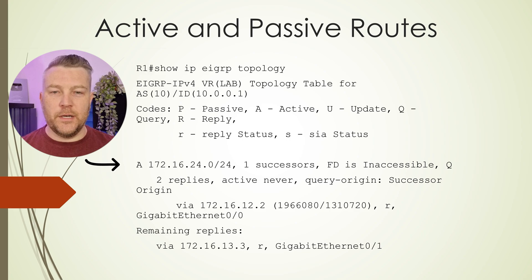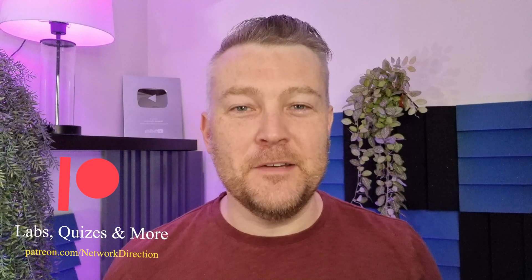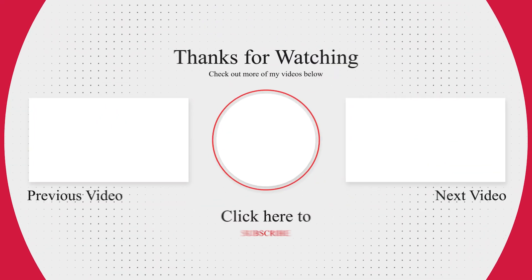Unfortunately it's very hard to force an active route in a lab like this, but it would look something along these lines. I hope that clears up in a nice simple easy way the difference between active and passive routes and why we especially want to avoid active routes if we can. I'll see you in another video.